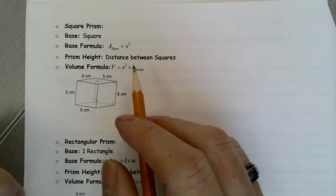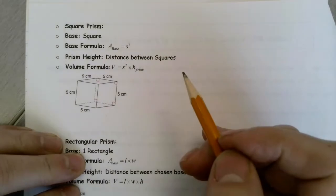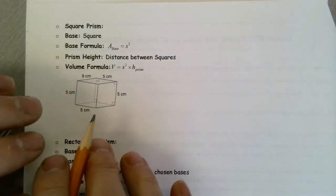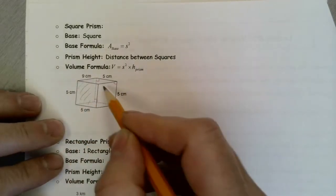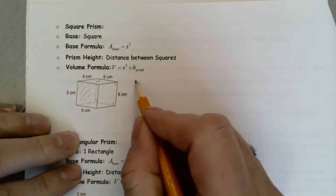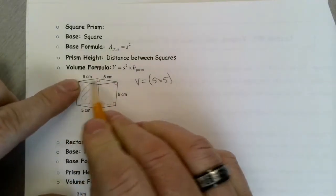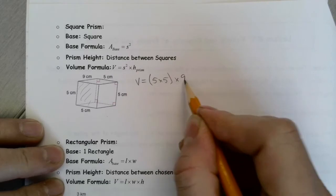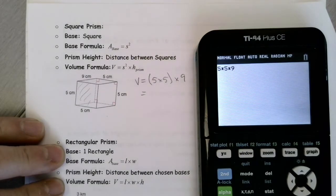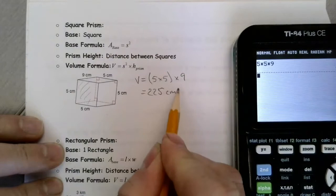Now for this question, we're looking at a square prism, so the base is a square. The area of the base is just the side length squared, and then we multiply by the height — the distance between the two bases. The distance between the bases is nine, which is the one measure different from the rest. So the volume is five times five, times nine. Using a calculator: 5 times 5 times 9 gives us 225 centimeters cubed.